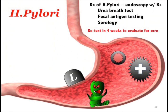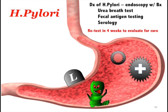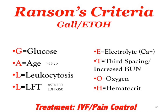H. pylori causes three things in the stomach: lymphoma, ulcers, and adenocarcinoma. If you treat H. pylori and want to retest, you must wait four weeks. Ranson's criteria is used to prognose pancreatitis — mnemonic: GALL and ETOH. At presentation, look at Glucose >200, Age, Leukocytosis, and Liver functions. At 24-48 hours (ETOH): check Electrolytes (calcium dropping), third-spacing, hypoxia, and anemia.